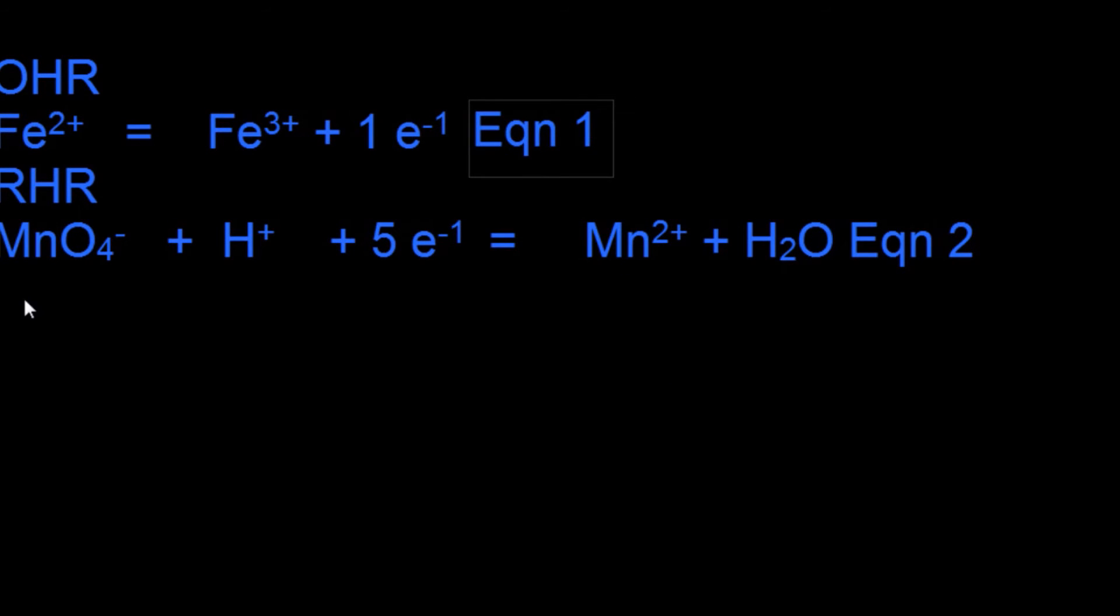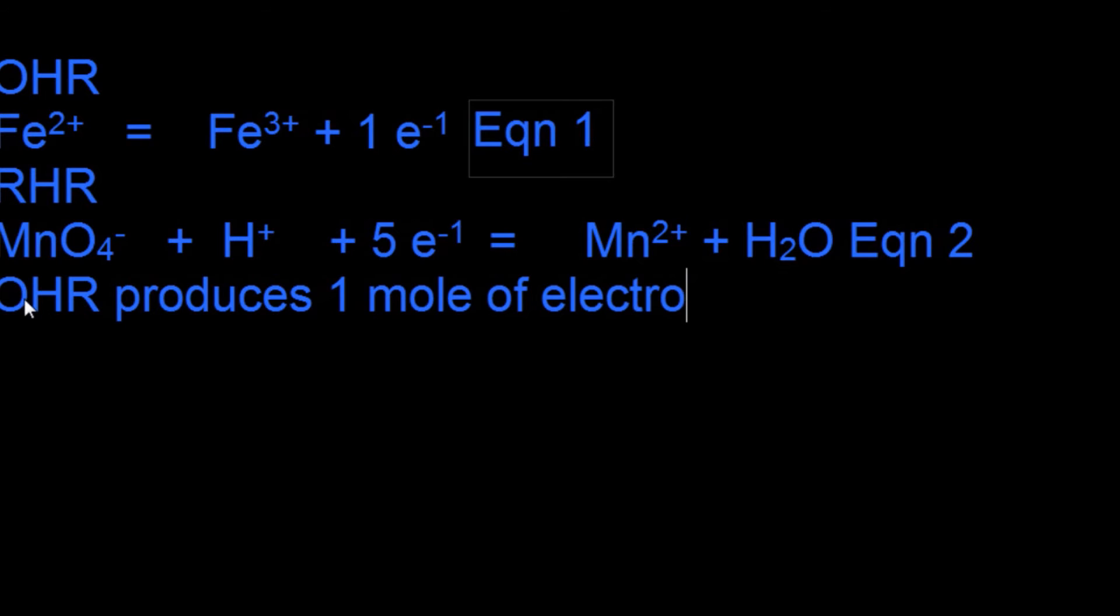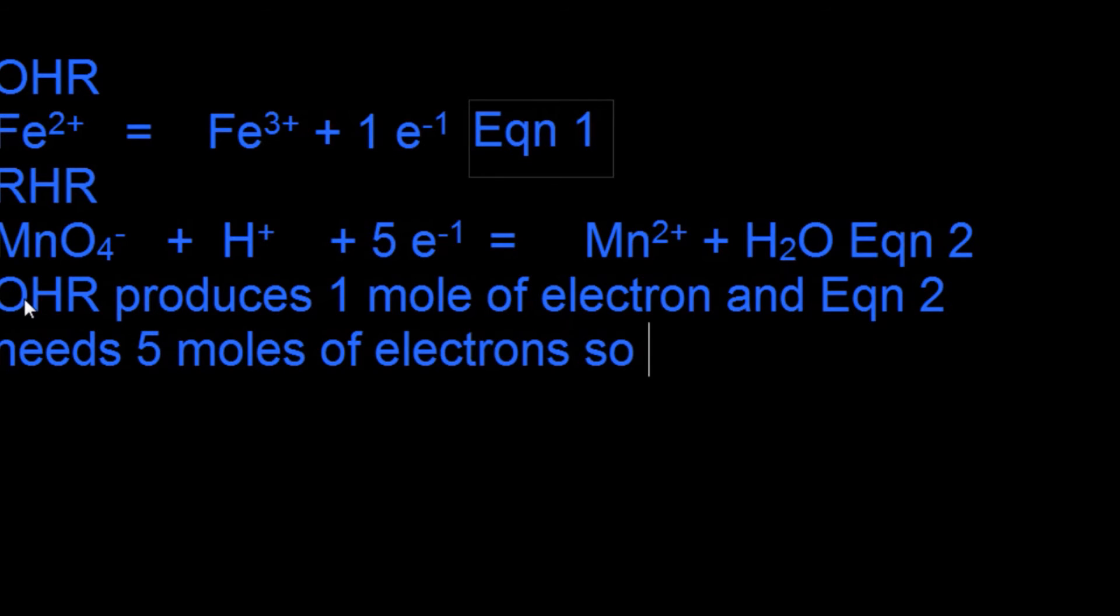The oxidation half reaction: Fe2+ changes to Fe3+ + 1 electron. That's the oxidation half reaction, loss of electrons. Reduction half reaction: MnO4- + H+ + 5 electrons giving Mn2+ is gain of electrons, therefore it's a reduction half reaction. Since there are four oxygen atoms, that will change into four moles of water.